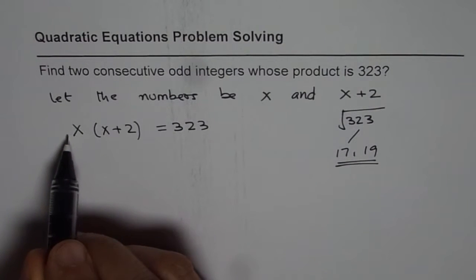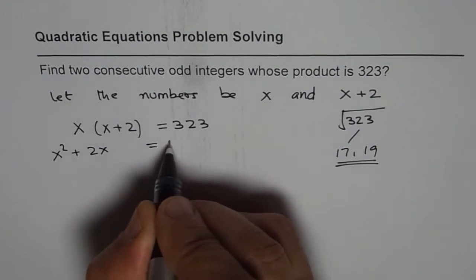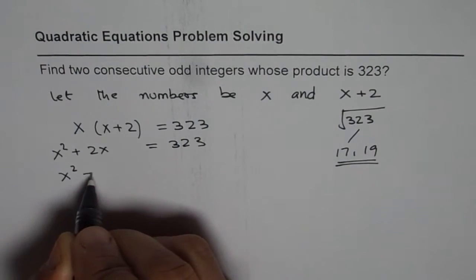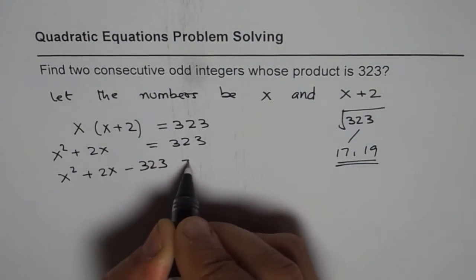Method is, open the brackets. So you get x squared plus 2x equals to 323. Bring them one side, x squared plus 2x minus 323 equals to 0.